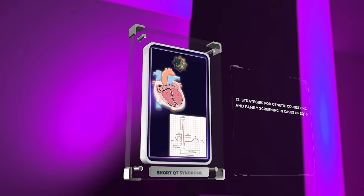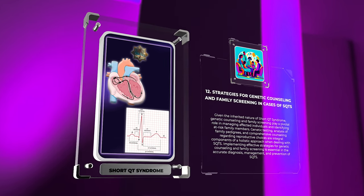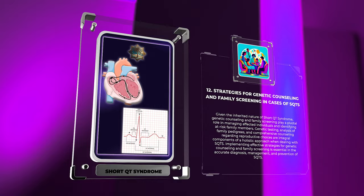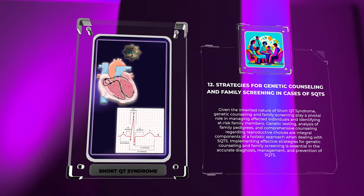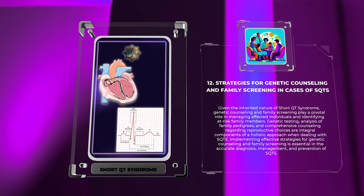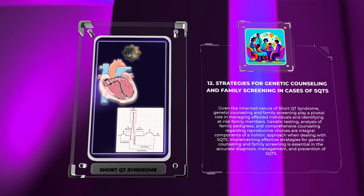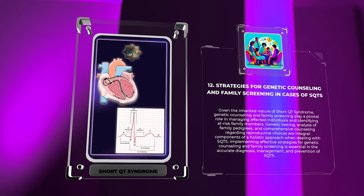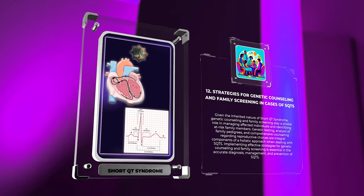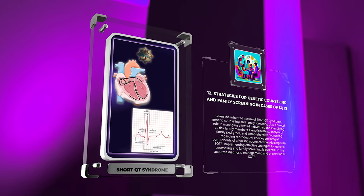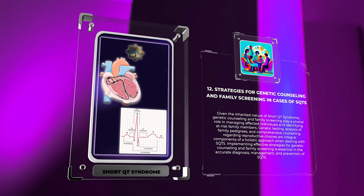Given the inherited nature of Short QT Syndrome, genetic counseling and family screening play a pivotal role in managing affected individuals and identifying at-risk family members. Genetic testing, analysis of family pedigrees, and comprehensive counseling regarding reproductive choices are integral components of a holistic approach when dealing with SQTS. Implementing effective strategies for genetic counseling and family screening is essential in the accurate diagnosis, management, and prevention of SQTS.